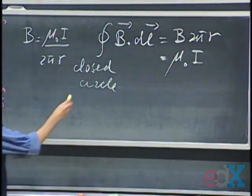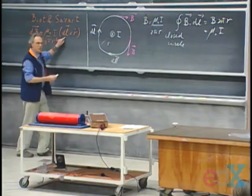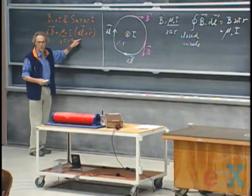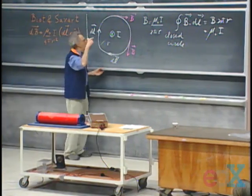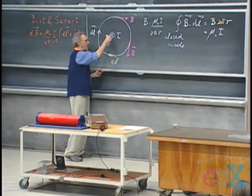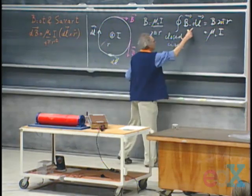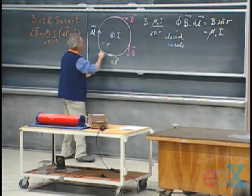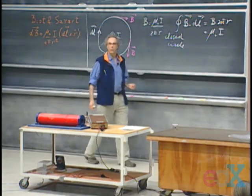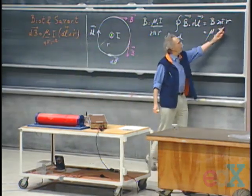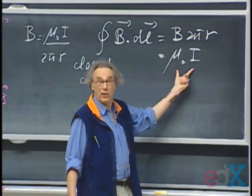This DL has nothing to do with the other DL. Don't confuse the two. This DL is a small amount of length in the wire going into the blackboard carrying a current. The other DL is simply your DL when you walk around the current wire. And it doesn't matter at what distance you walk around — you always get μ₀ times I.